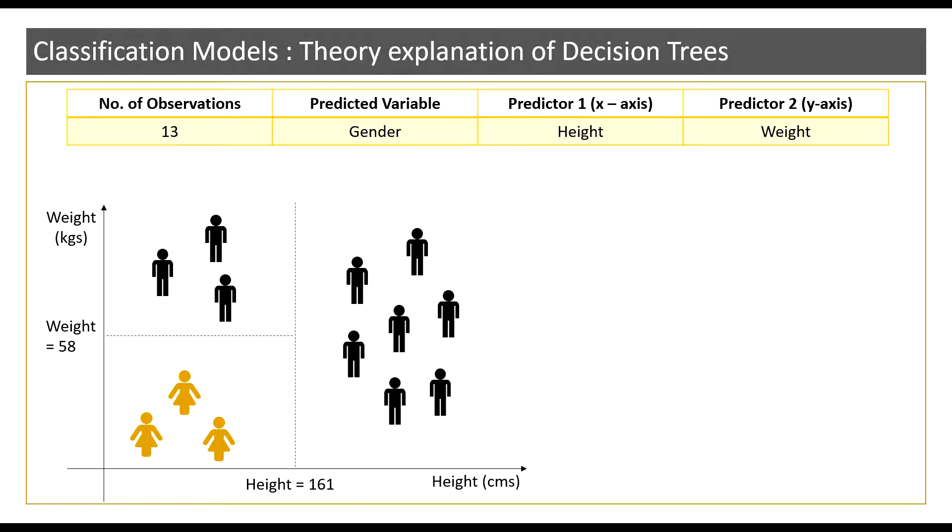These groupings you can see lie in various regions. Here in regions 1, 2 and 3 we now have homogeneous gender observations grouped together. Now before we move on to the decision tree model please understand that the height which is equal to 161 centimeters and weight which is equal to 58 kgs are my threshold values.